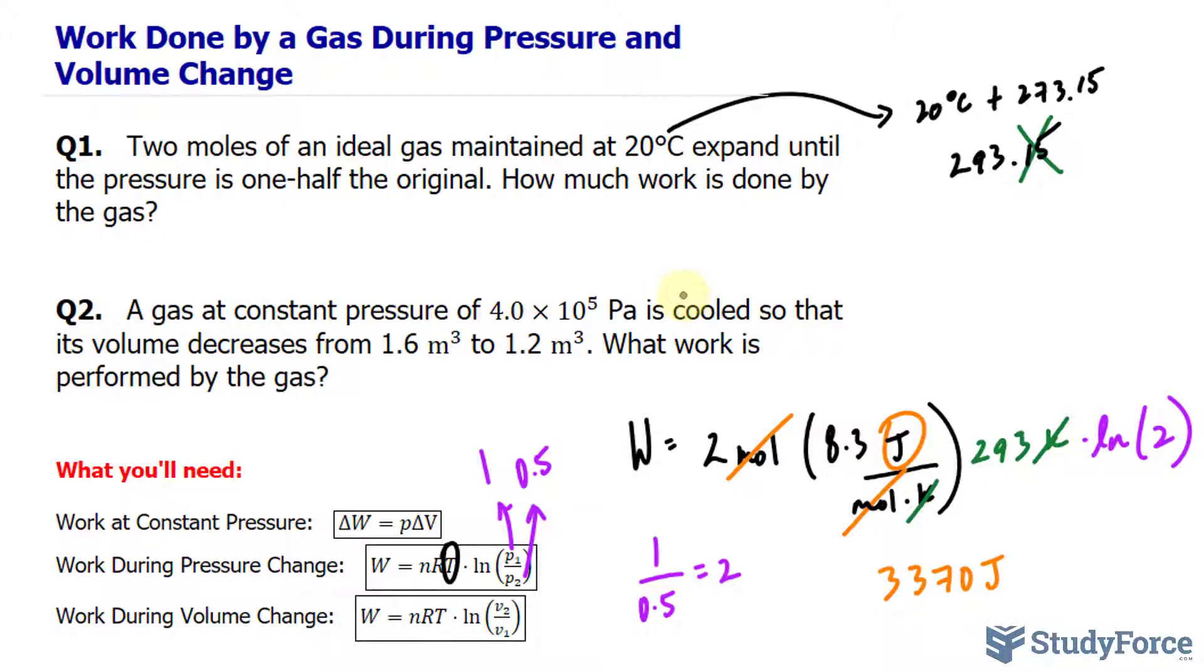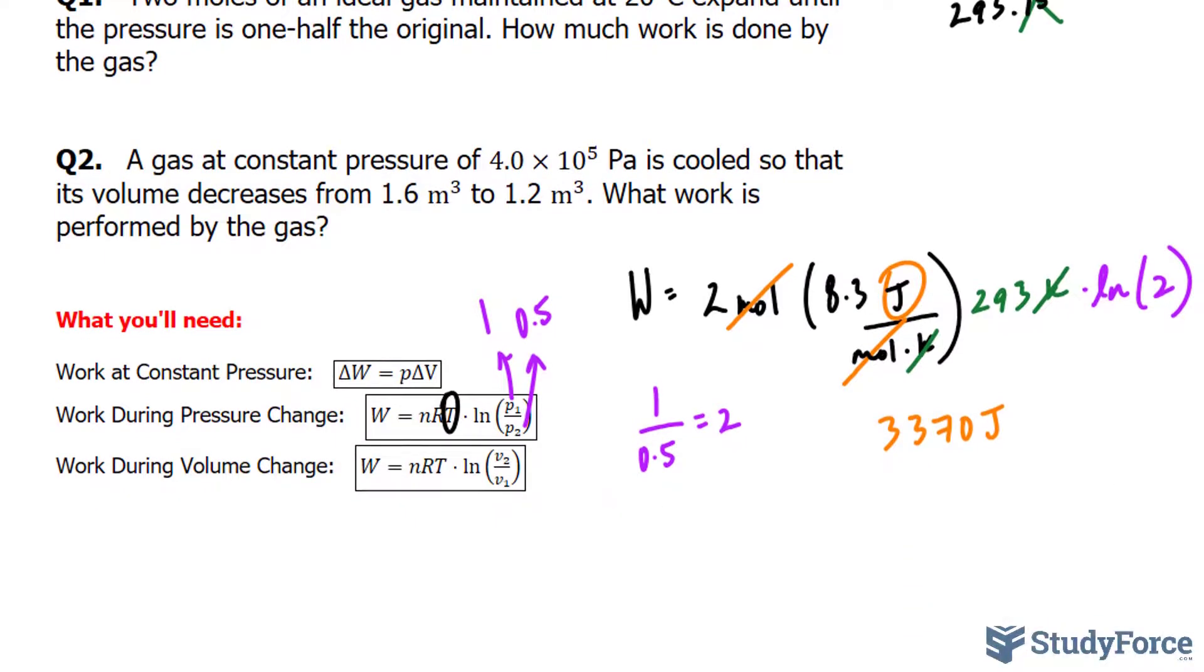Remember that as temperature increases, volume increases. They're directly proportional to one another. And in this case, the volume is decreasing as a result of the gas being cooled. So it's going the opposite way. Whenever your pressure is constant, then use this formula.